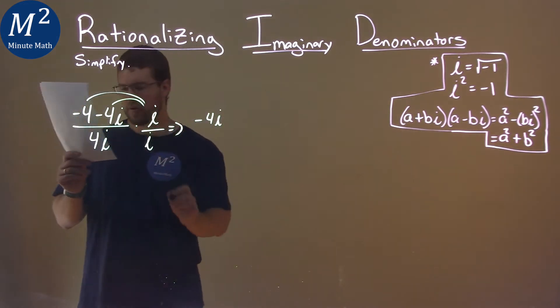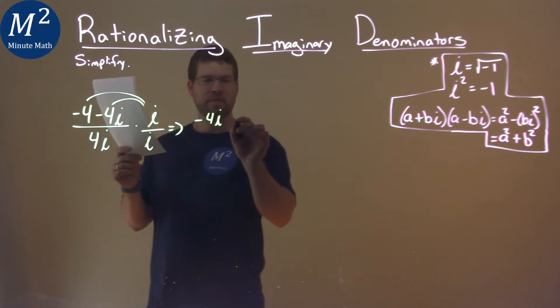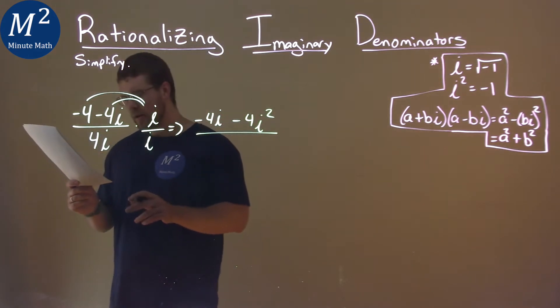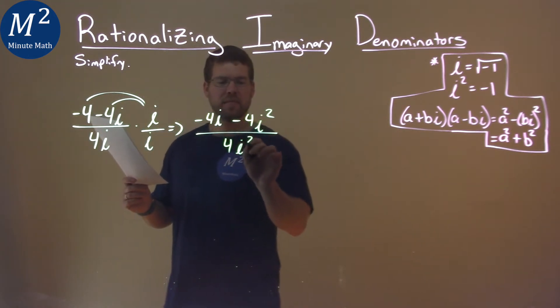And then negative 4i times i is negative 4i squared. The denominator, 4i times i is 4i squared.